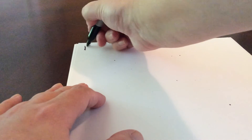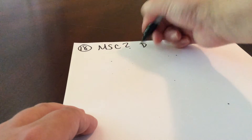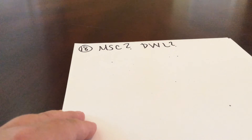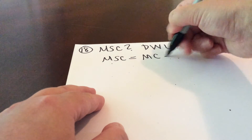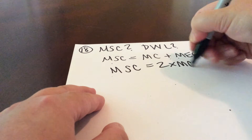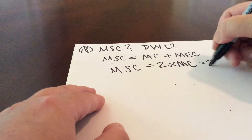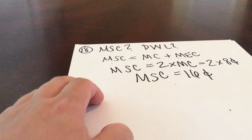Now moving to question 18: with no government action to control pollution, what is the marginal social cost of the electricity generated and the deadweight loss created? Going back to our equation, marginal social cost equals marginal cost plus marginal external cost — and for this specific case, it's 2 times the marginal cost. We found in the previous question that our marginal cost was 8 cents, so the marginal social cost is simply 16 cents.